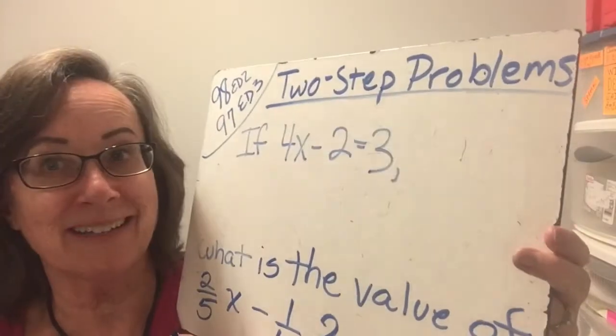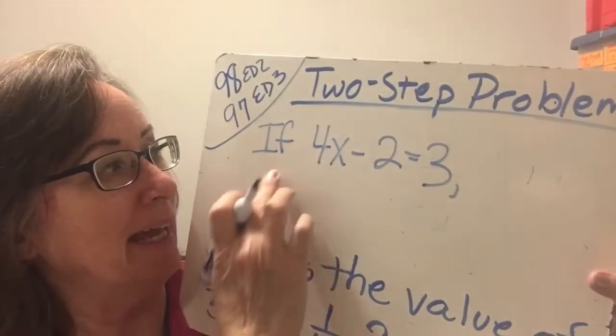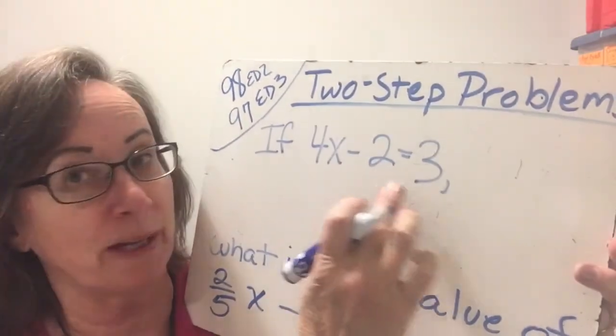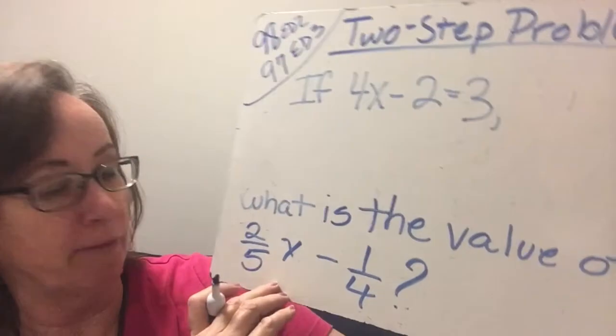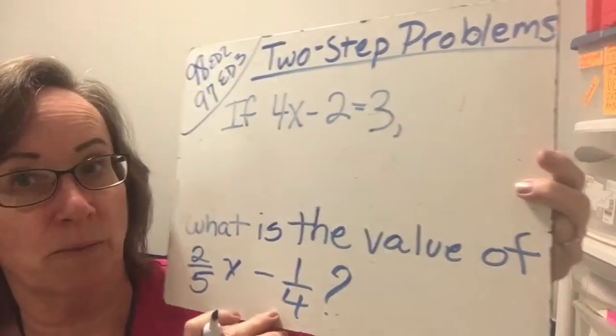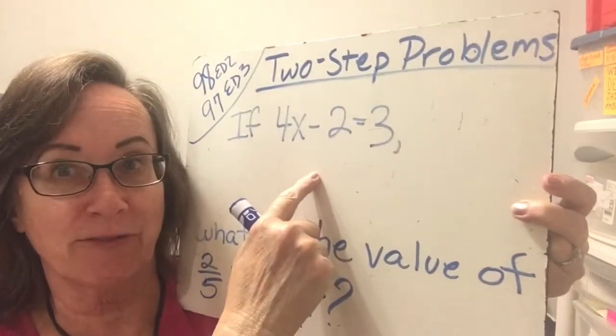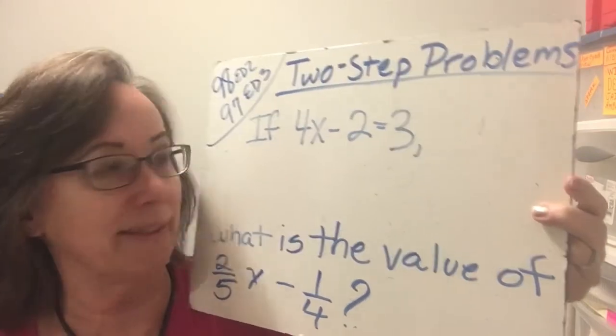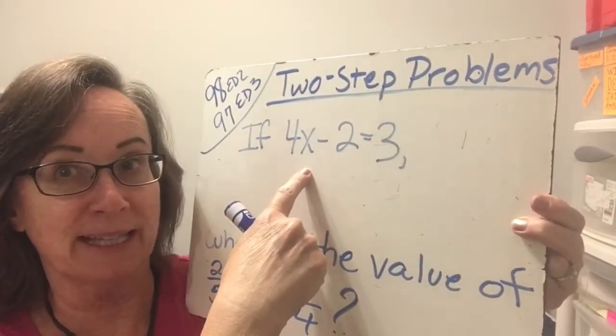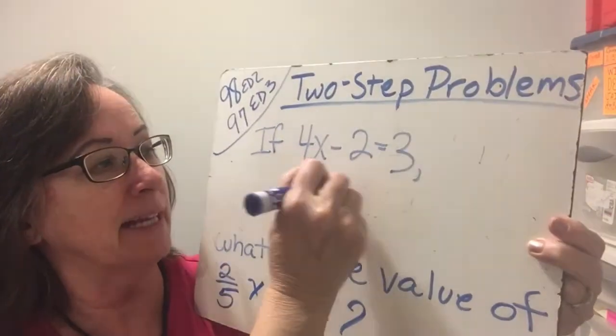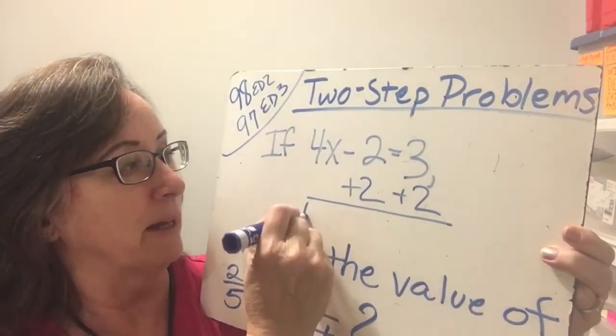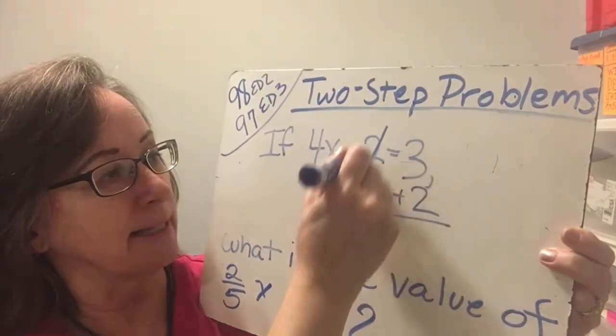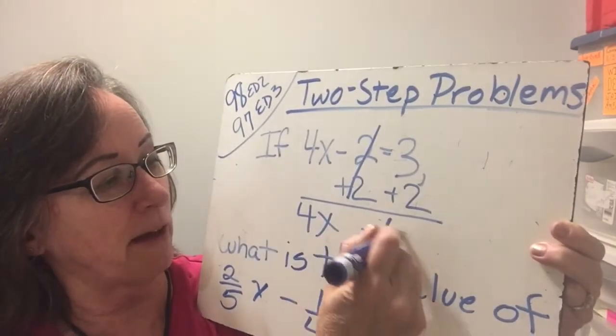Here is example 2. If 4x minus 2 equals 3, what is the value of 2 fifths x minus 1 fourth? So again, we have to find this in order to be able to find this. To solve this one, we're going to add a 2 to get the 4x by itself, and we'll do that on both sides. We get 4x. This cancels equals 5.